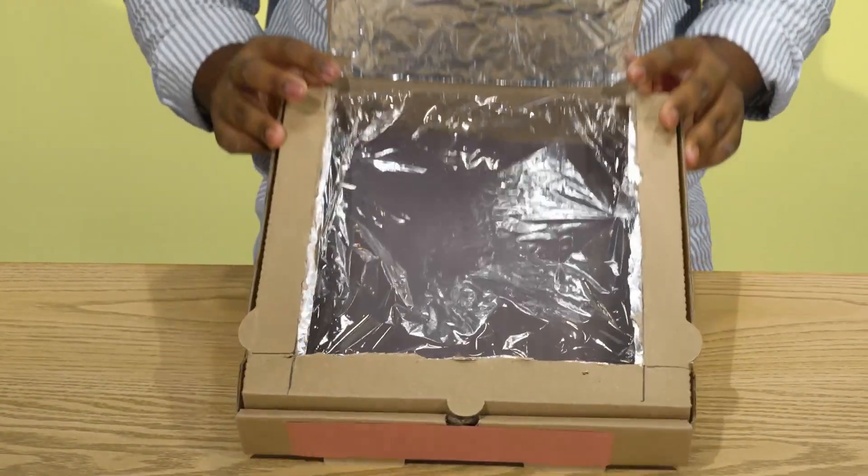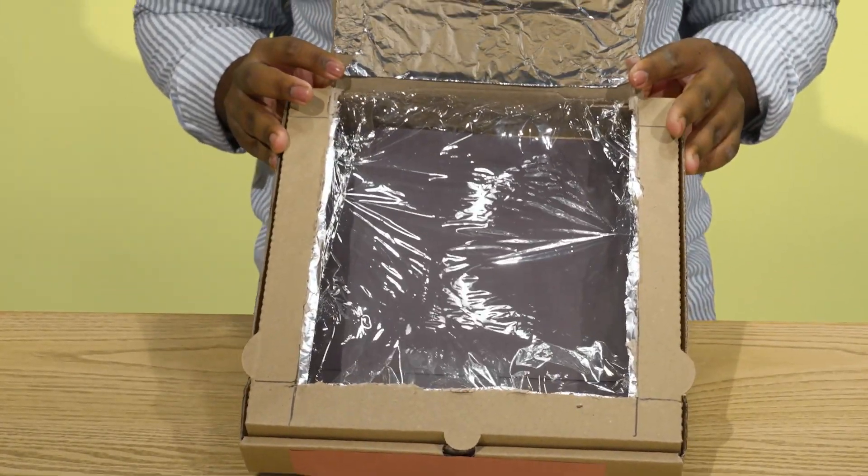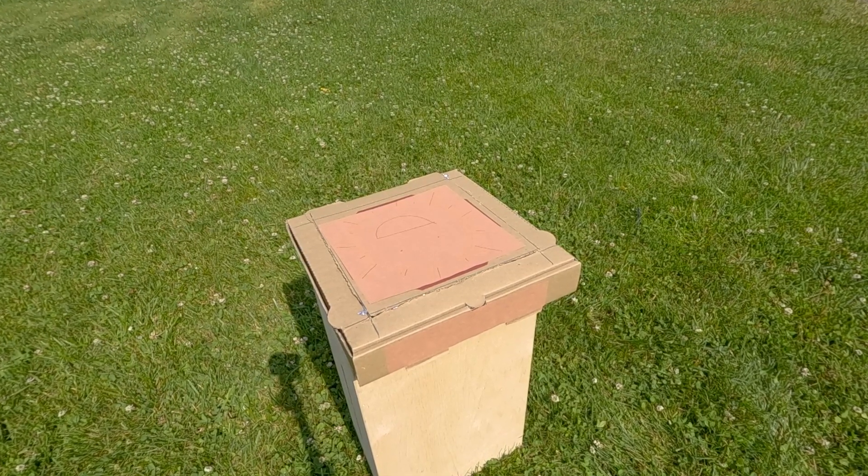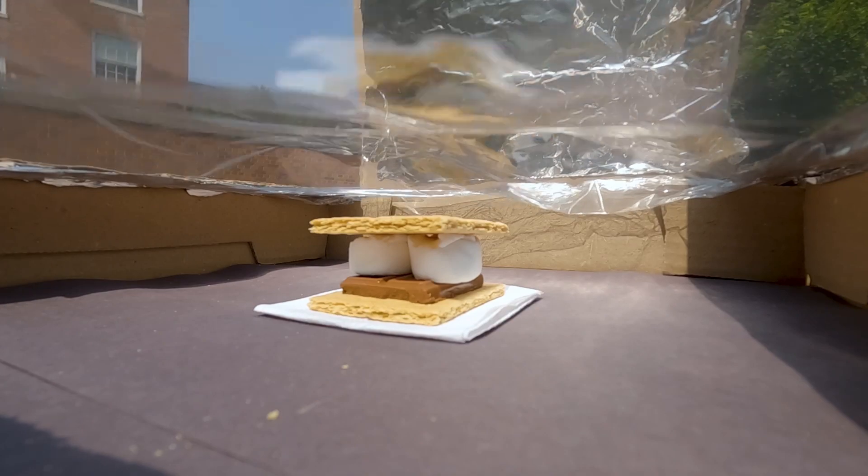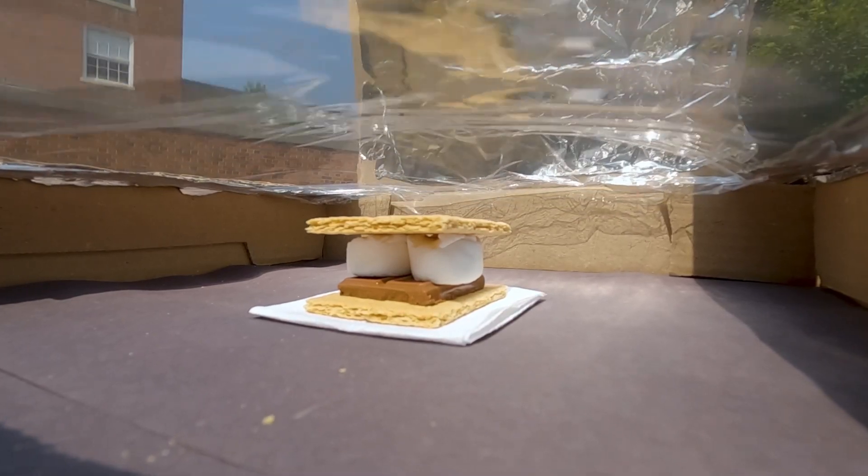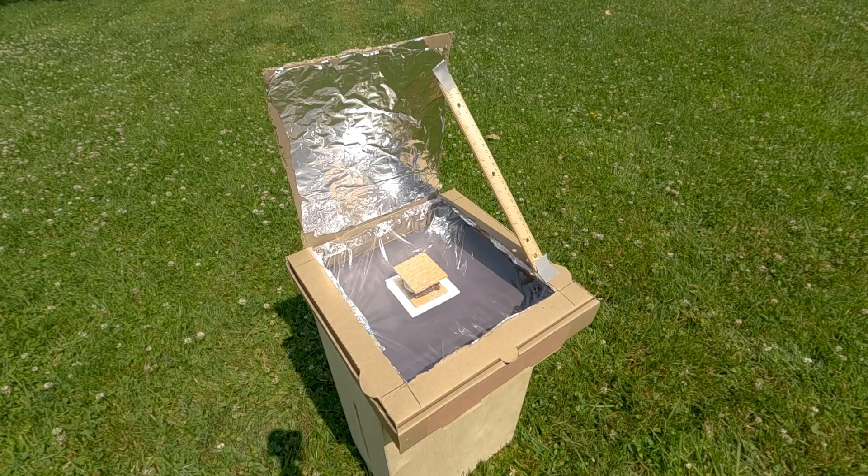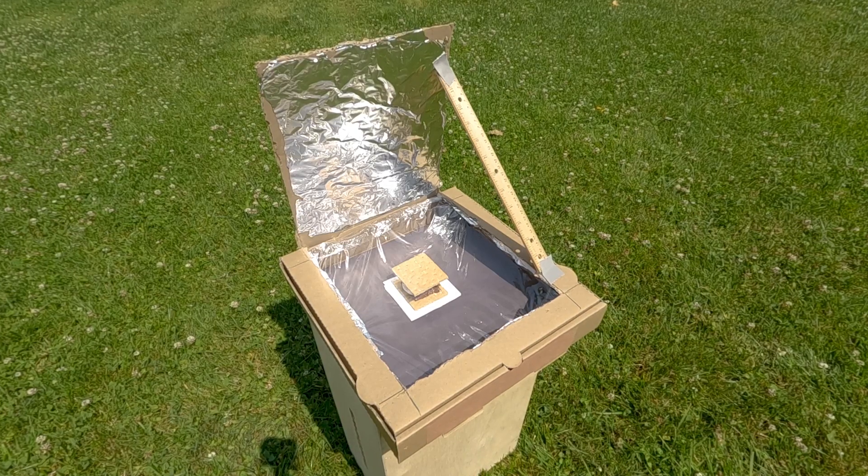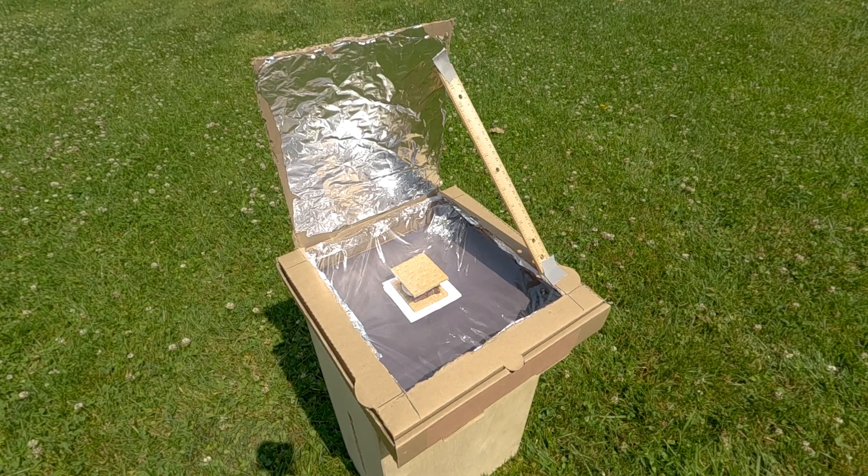You're now ready to test your solar oven and cook a s'more. Find a sunny spot outdoors that receives a lot of direct sunlight. Place your s'more on a small plate on the black construction paper and close the lid. Open the foil covered flap in the lid and angle it toward the sun. Use a ruler or stick and some tape to prop open the flap if needed.